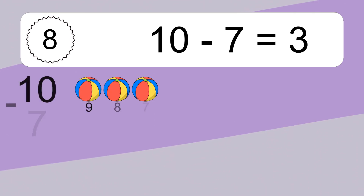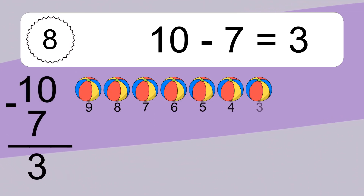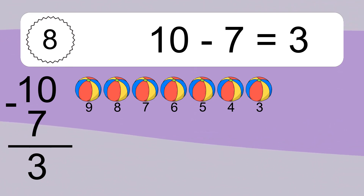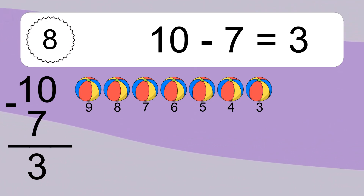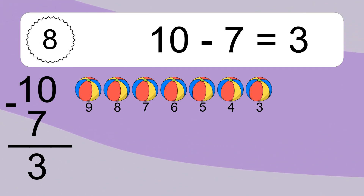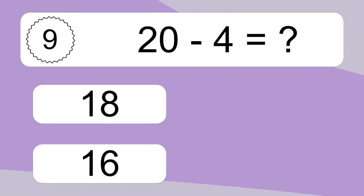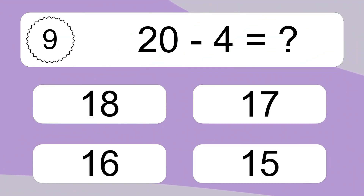10 minus 7 equals what? 10 minus 7 equals 3. Let's count it: 9, 8, 7, 6, 5, 4, 3.